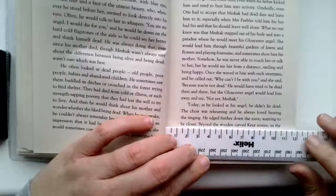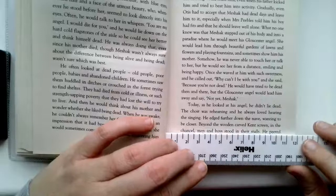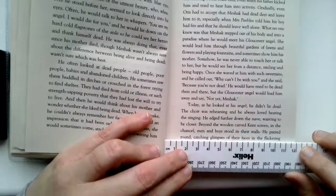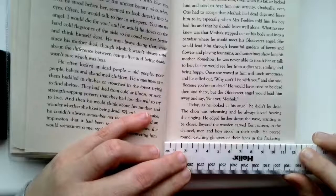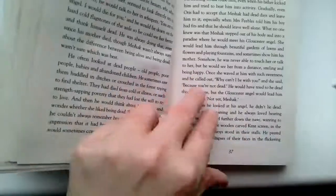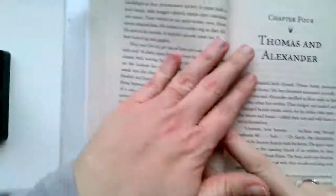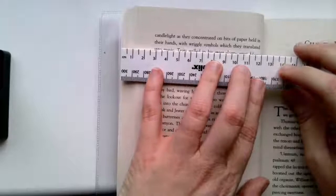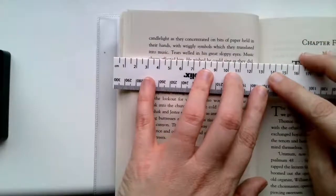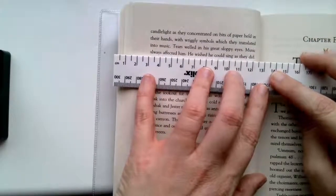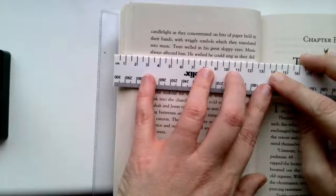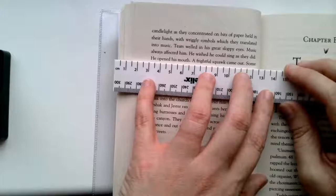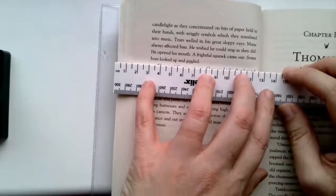He edged further down the nave, wanting to be closer. Beyond the wooden carved rood screen in the chancel, men and boys stood in their stalls. He peered round, catching glimpses of their faces in the flickering candlelight as they concentrated on bits of paper held in their hands with wiggly symbols which translated into music. Tears welled in his great, sloppy eyes. Music always affected him. He wished he could sing as they did. He opened his mouth. A frightful squawk came out. Some boys looked up and giggled.